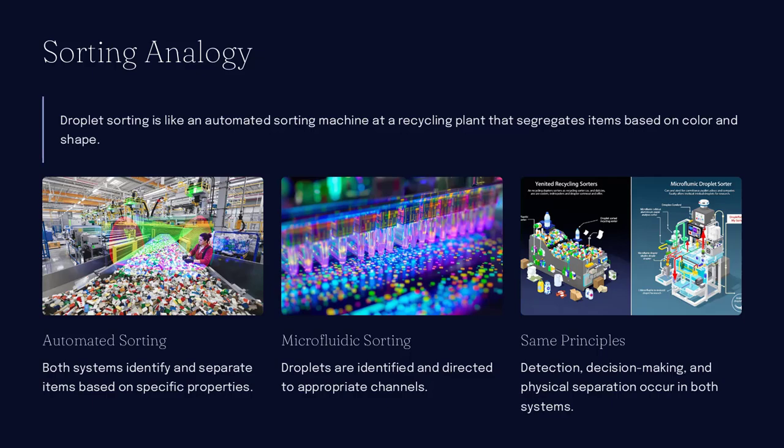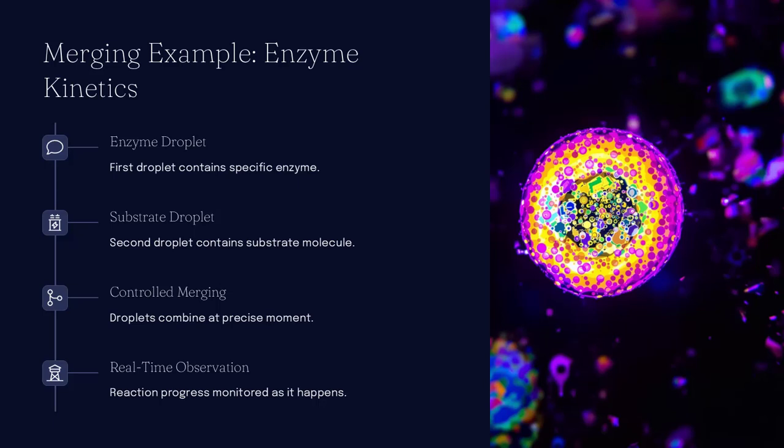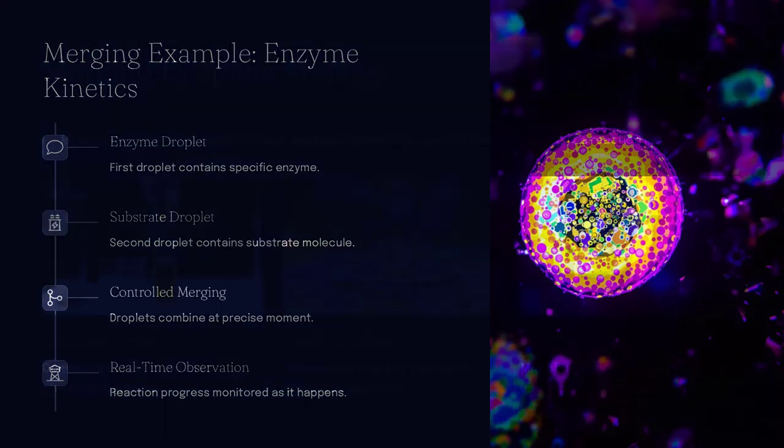and magnetic fields can all be used to influence droplet motion. Electrowetting, for instance, changes the surface tension between a droplet and a substrate by applying voltage, allowing the droplet to move, split, or coalesce on a flat surface.